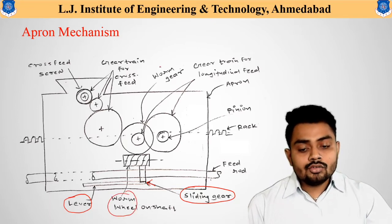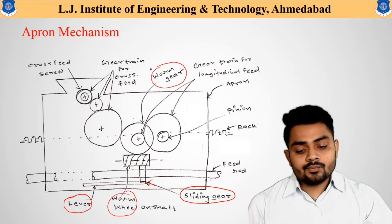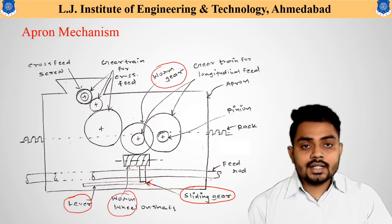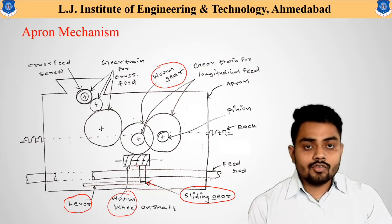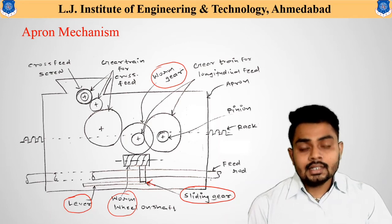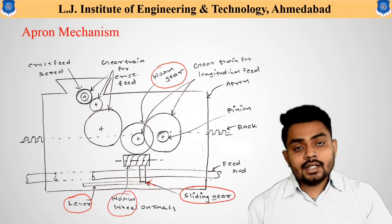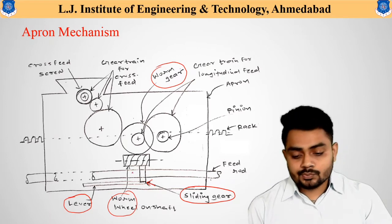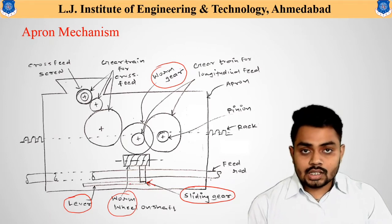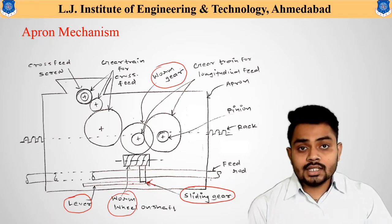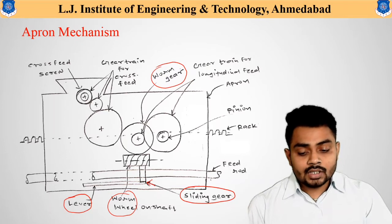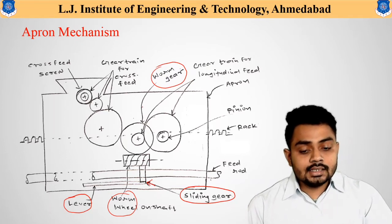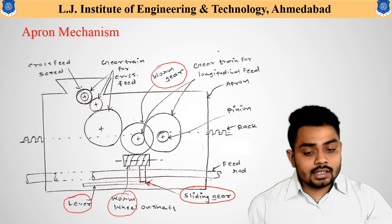As studied in your design subject, the worm and worm wheel are useful for transmitting motion when there are high velocity ratios. The next important parts are the worm gear and the worm wheel.